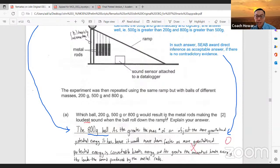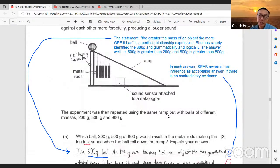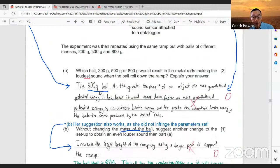This experiment, they say which ball, 200, 500 or 800 gram would result in the metal rods making the loudest sound when the ball roll down the ramp. The student has actually identified the correct ball, 800 grams. But she was given zero marks. Do take note parents because in the current PSLE marking protocol, for question with two marks, if the student is required to explain, although the student has identified the correct answer, but if the answer is wrong, no marks will be given.